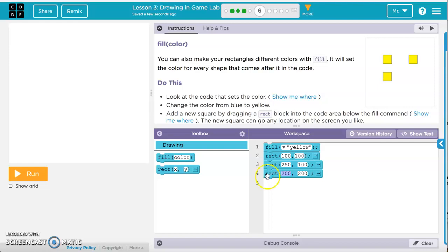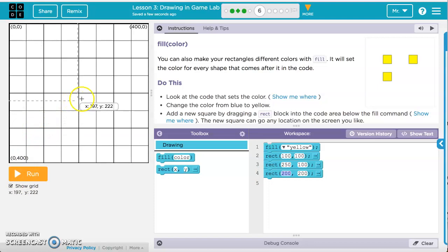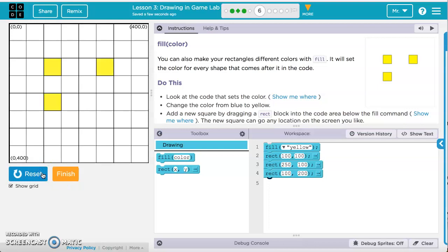And it says the square can go anywhere on the screen we like, but we can also hit show grid to decide exactly where we want it. Now if I'm going to make it look like this picture here, I can go ahead and set it right here, which would be 100 for the X and 200 for the Y. So I'll go ahead and adjust this last rectangle I just added. Click in here so I can change the numbers, 100 for the X, 200 for the Y, and then if I run it, it shows up just like the picture.